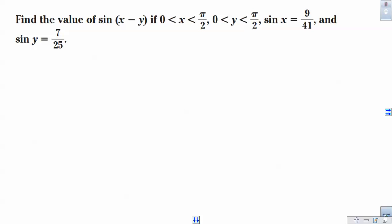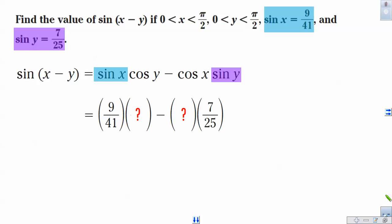Maybe we'll start with the fact that they ask us to take the sine of x minus y. According to our identities, sine of x minus y is sine x cosine y minus cosine x sine y. Now, one thing that I notice here is that they give us half of the info. They give us the sine of x is 9 over 41, sine of y is 7 over 25, but we do not know the cosines of each one of these. They noticeably left that out.